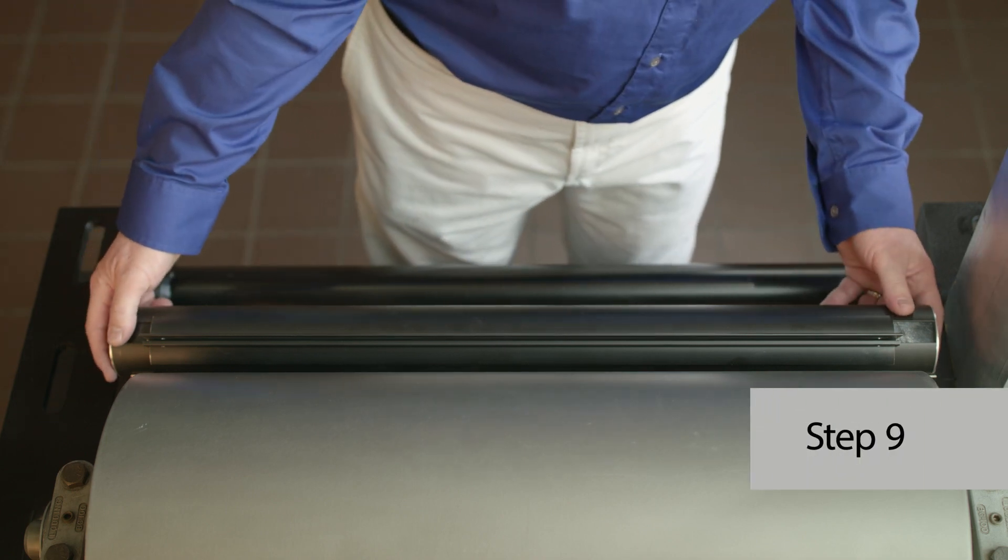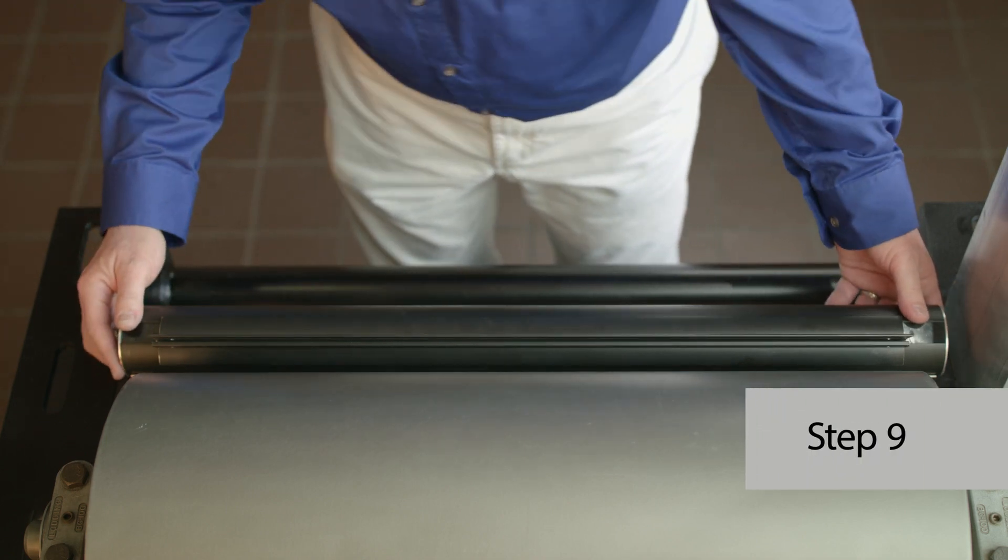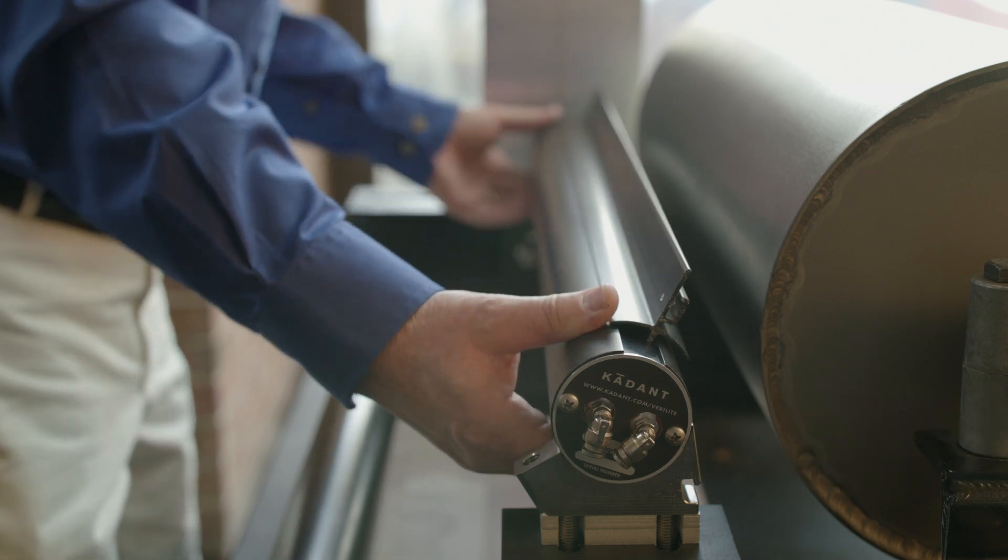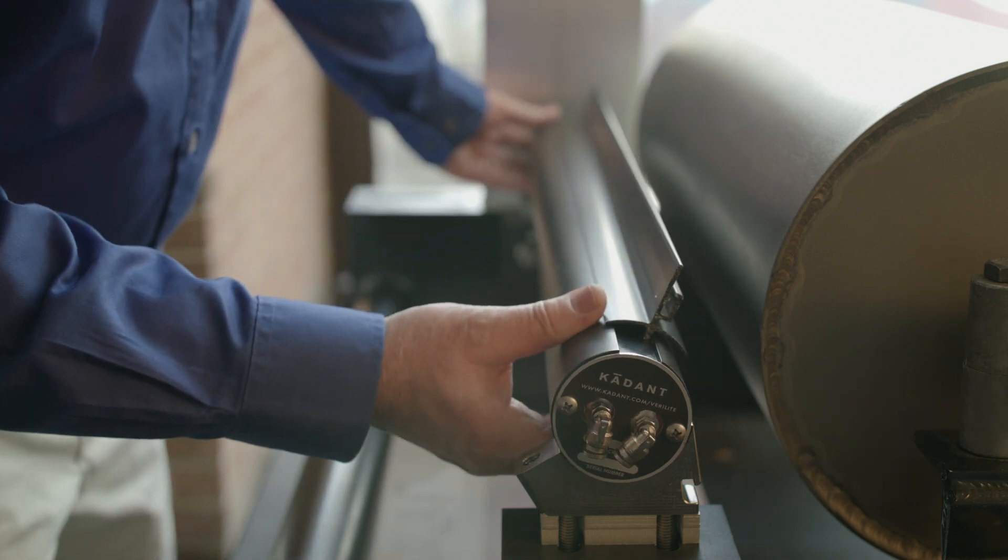Step nine, place the Verilite assembly into the bearing clamps. Center it on the roll surface or as otherwise instructed by the installation drawing.